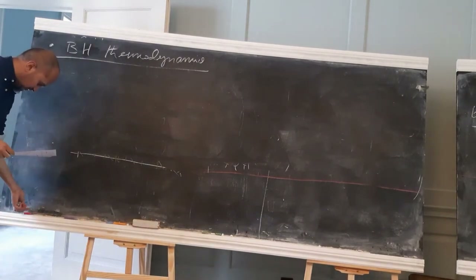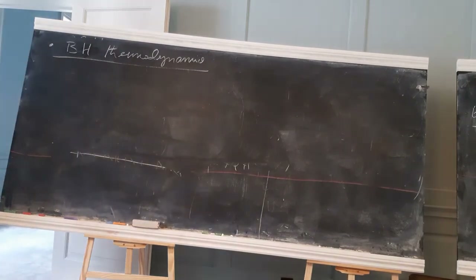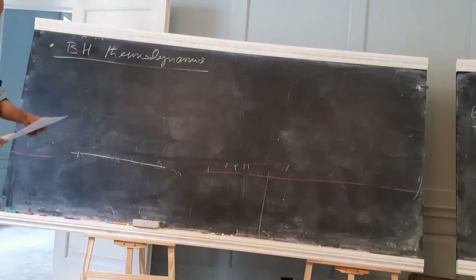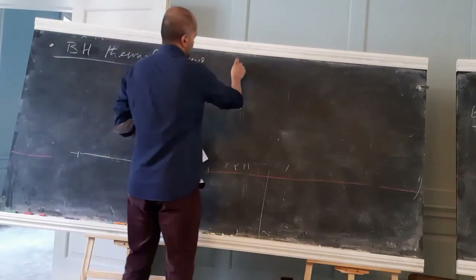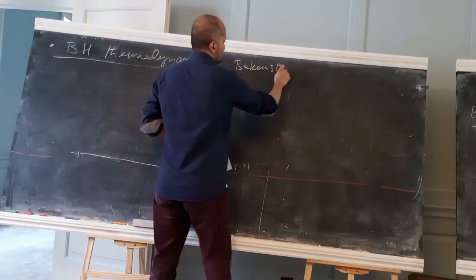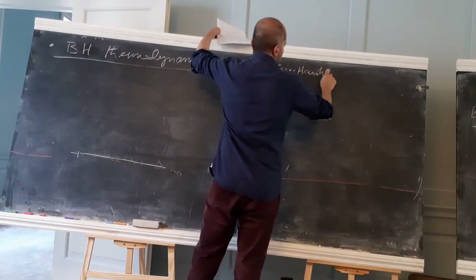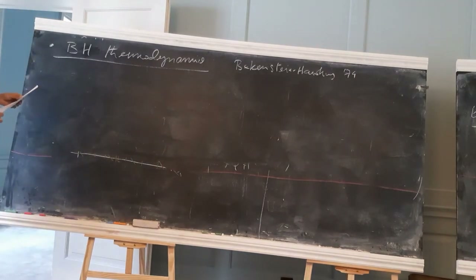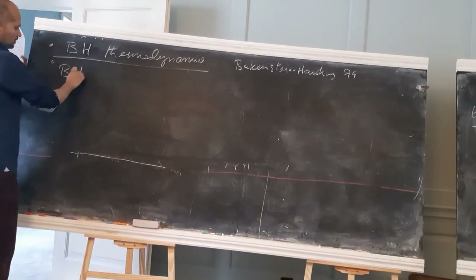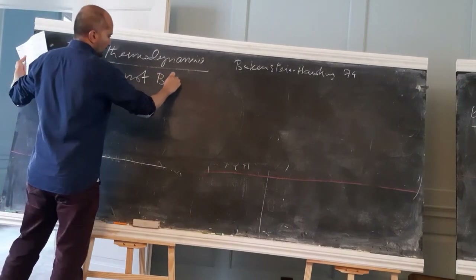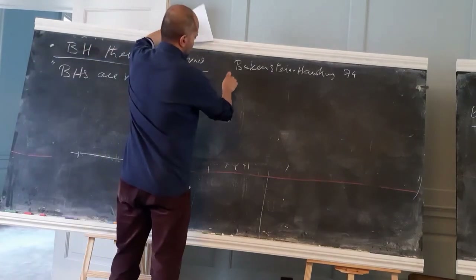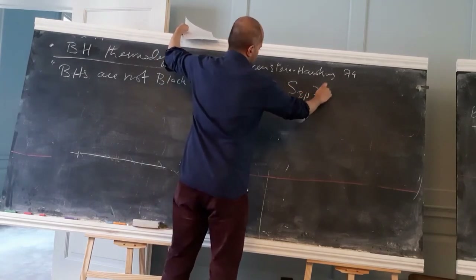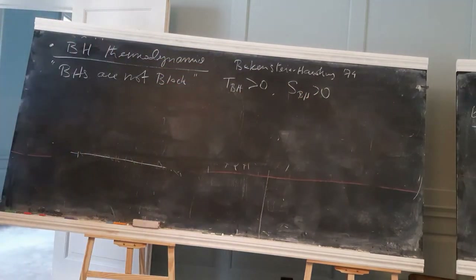After the break: Bekenstein and Hawking in the 1970s made the remarkable discovery that black holes are not black. You can associate a temperature and entropy to a black hole, and the black hole radiates at that temperature.